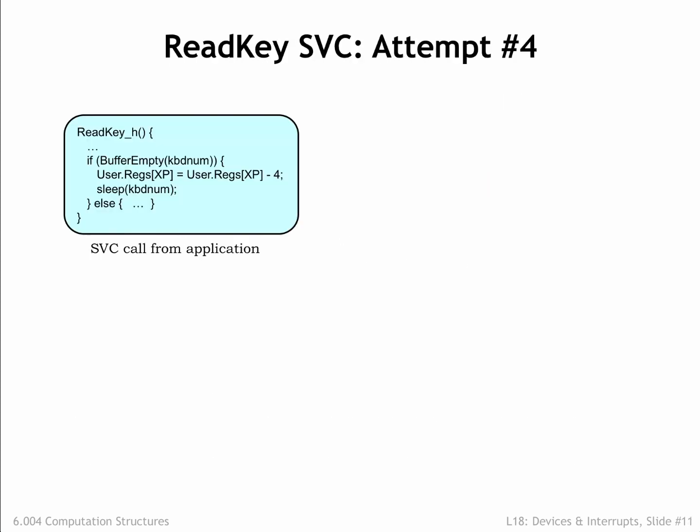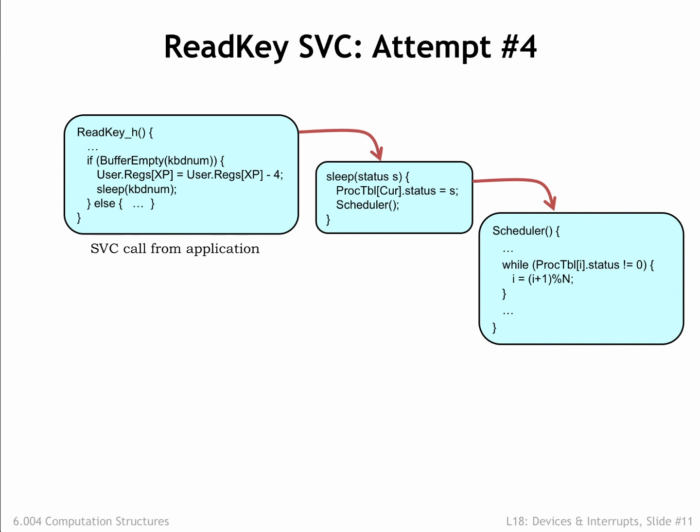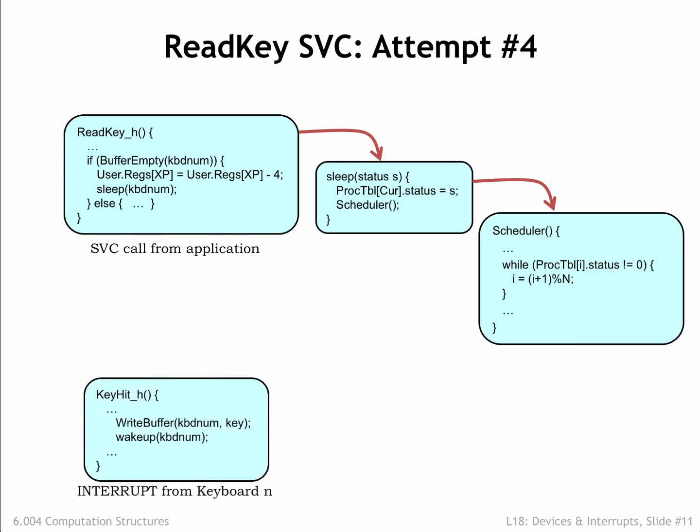To see how this works, it's easiest to use a concrete example. The UNIX OS has two kernel subroutines, sleep and wakeup, both of which require a non-zero argument. The argument will be used as the value of the status field. When the readkey supervisor call detects the buffer is empty, it calls sleep with an argument that uniquely identifies the I/O event it's waiting for — in this case, the arrival of a character in a particular buffer. Sleep sets the process status to this unique identifier, then calls scheduler. The scheduler has been modified to skip over processes with a non-zero status, not giving them a chance to run. Meanwhile, a keyboard interrupt will cause the interrupt handler to add a character to the keyboard buffer and call wakeup to signal any process waiting on that buffer.